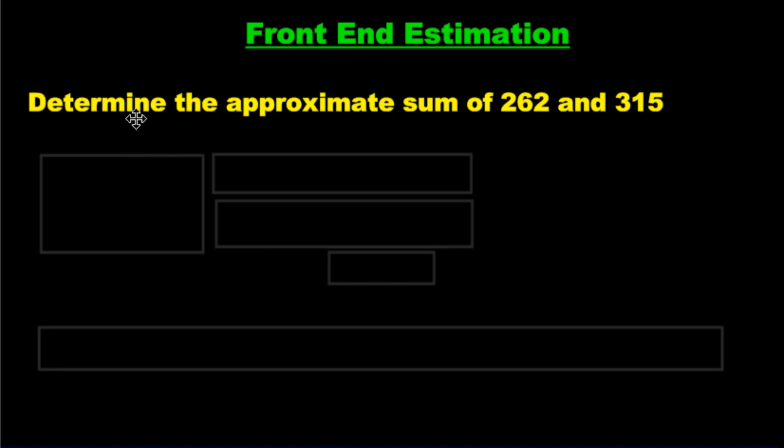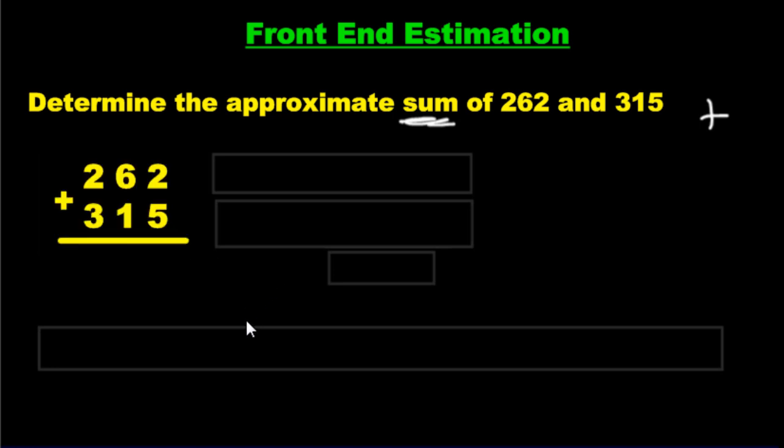The question states to determine the approximate sum of 262 and 315, and we're going to use this system called front-end estimation. The word sum, we know it means plus. So we're going to write our equation down. Front-end estimation says you need to take just the first digit, keep it, and turn everything into zeros.